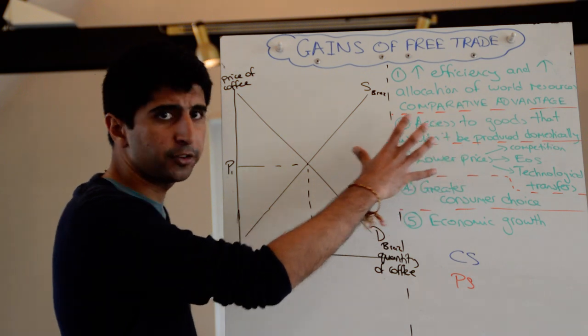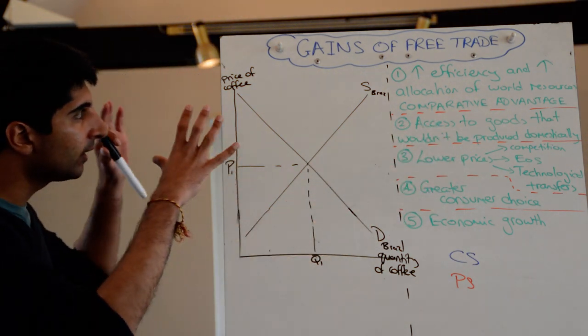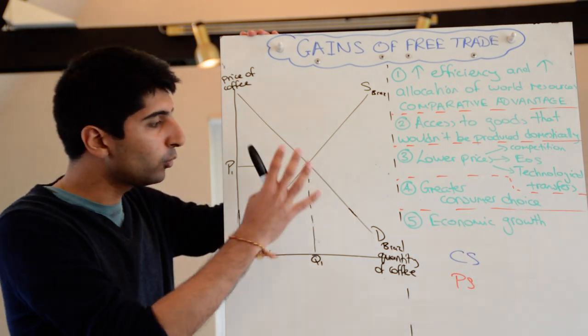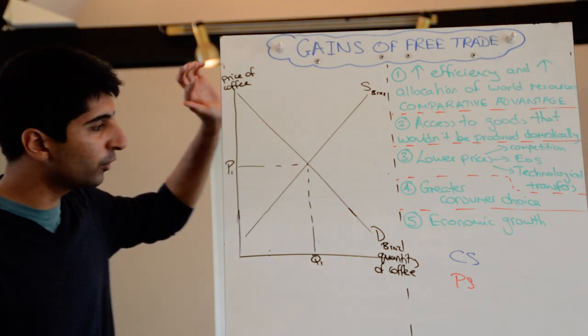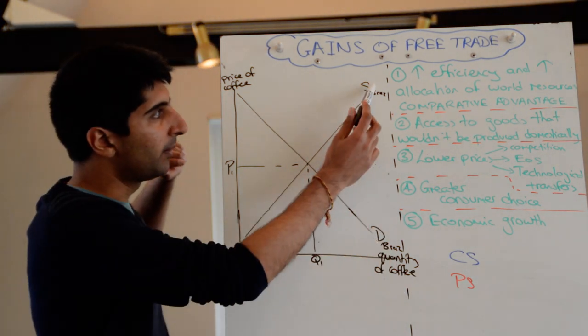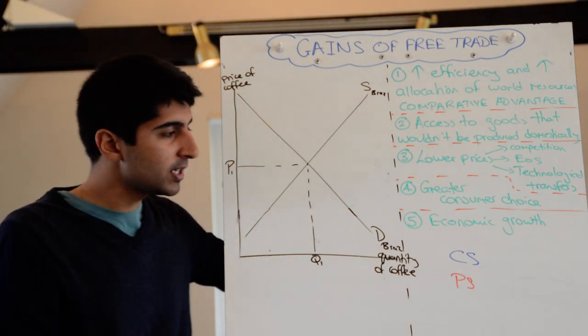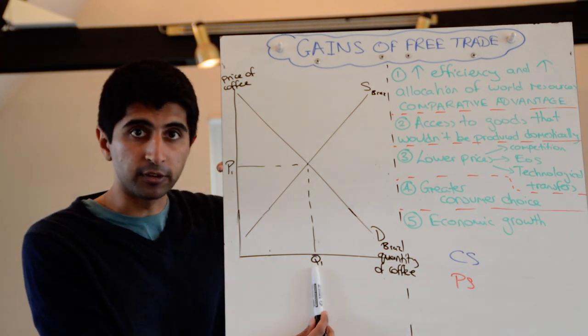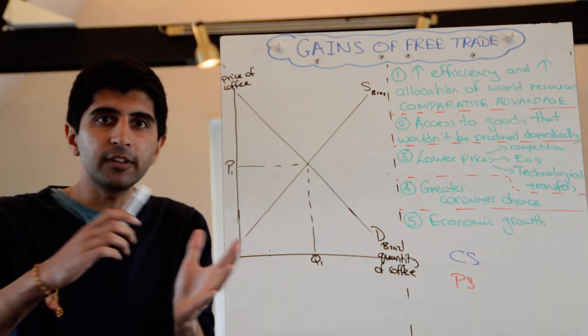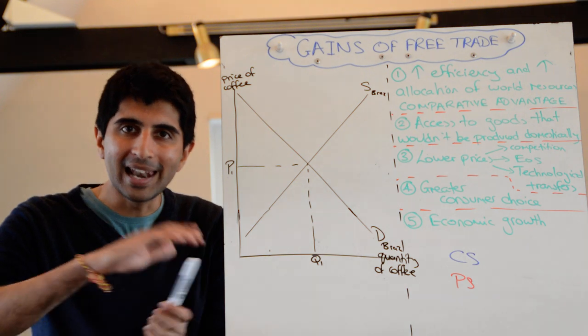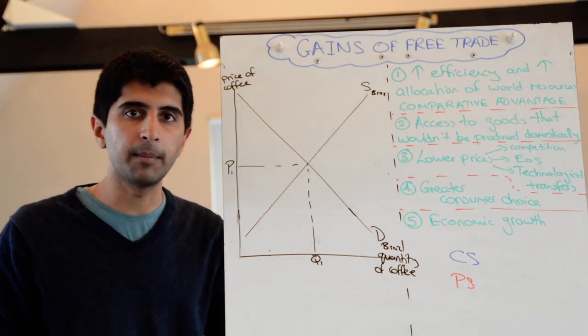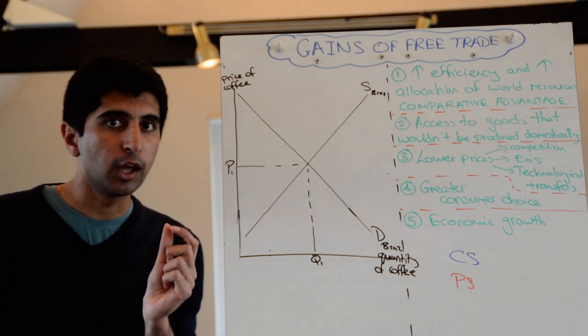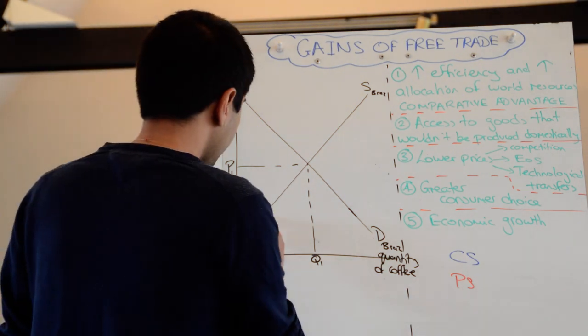Let's apply some of these concepts to a diagram now. So this is, let's just say, the Brazilian market for coffee. This is without free trade at the moment. We have the price of coffee, the quantity of coffee, Brazilian supply, Brazilian demand, where they meet, we have the price in Brazil and the quantity supplied in Brazil. But let's say Brazil opens up to free trade now and it allows world suppliers to come in. What's that going to do to this market? Well, the world supply curve is going to look very different. It's going to look like this. Supply of the world.